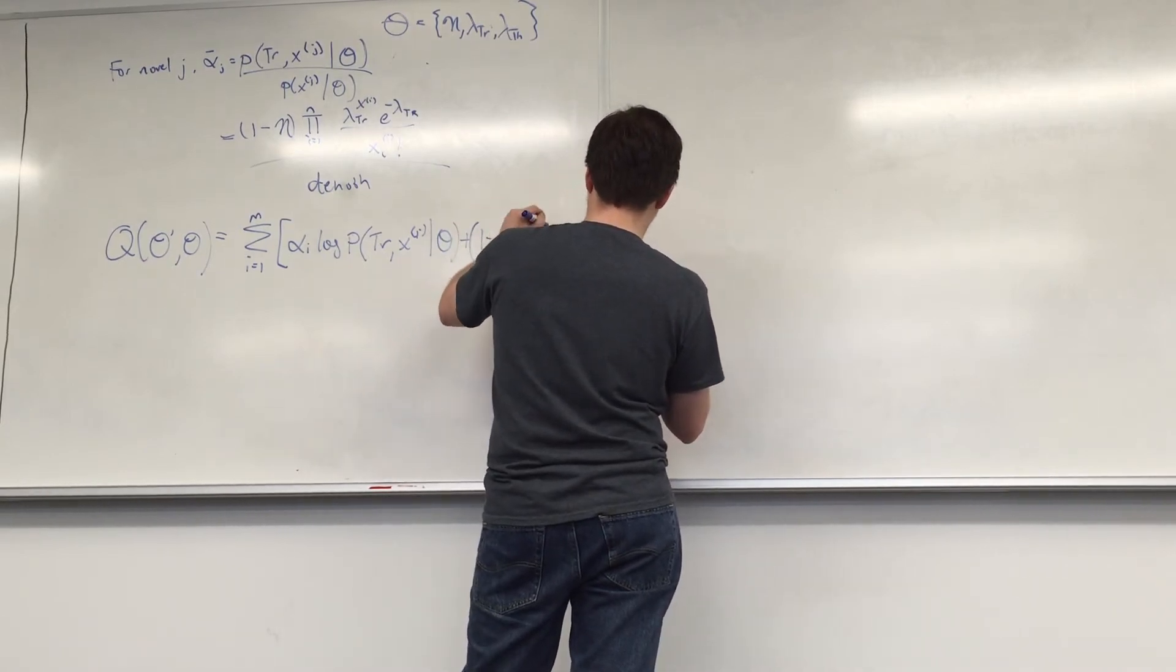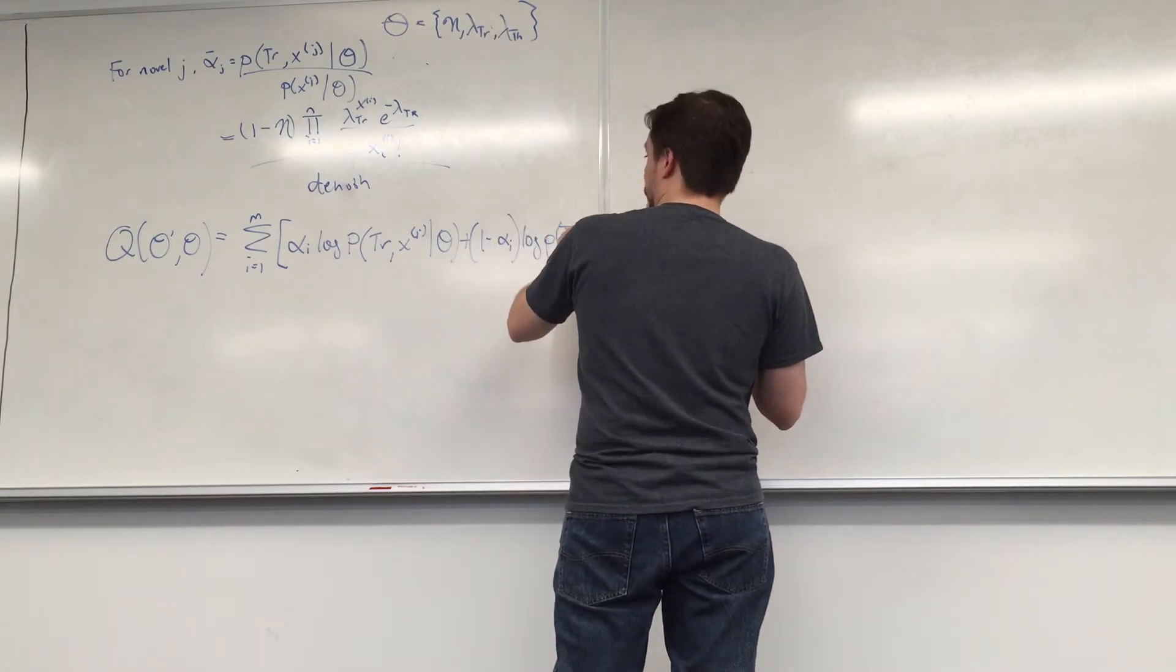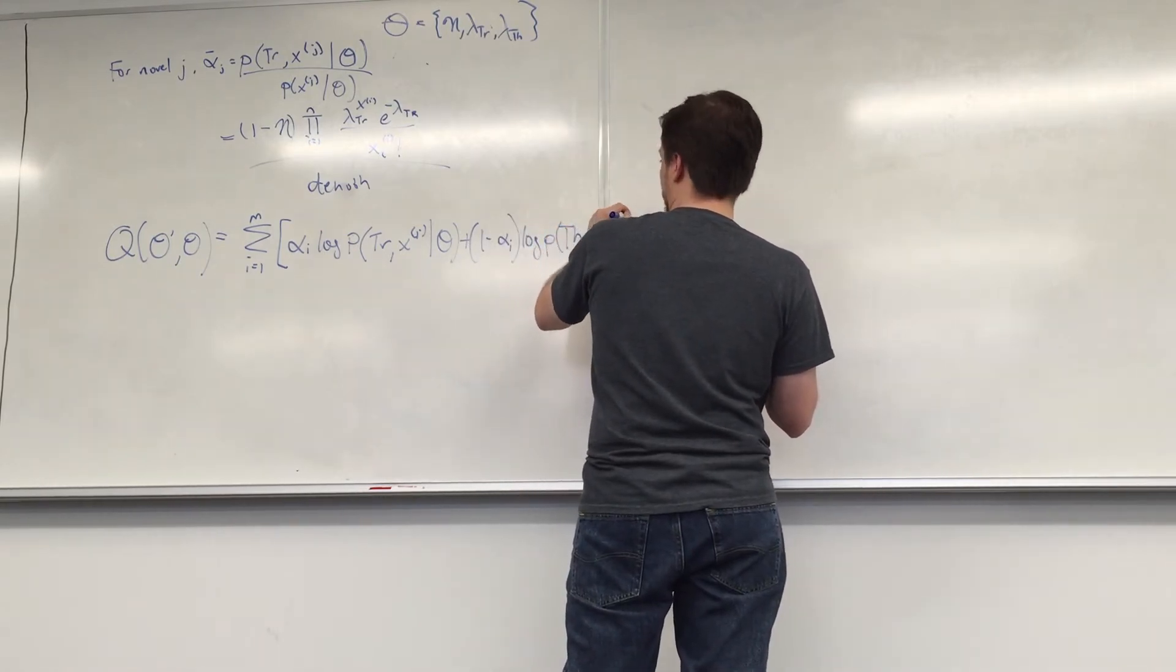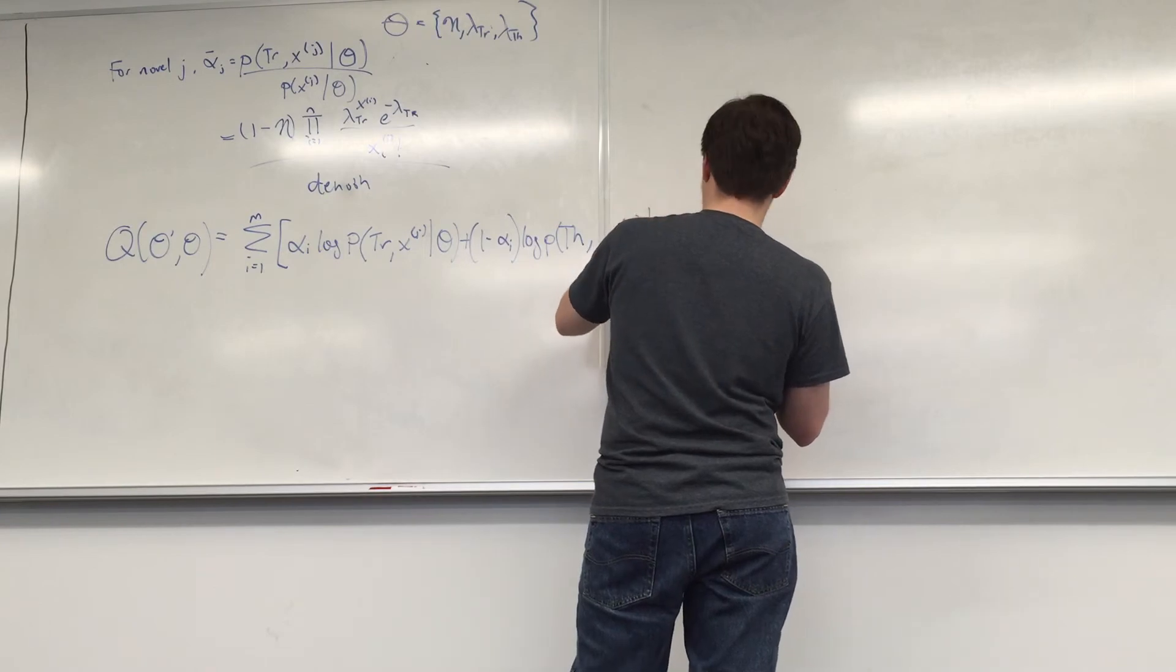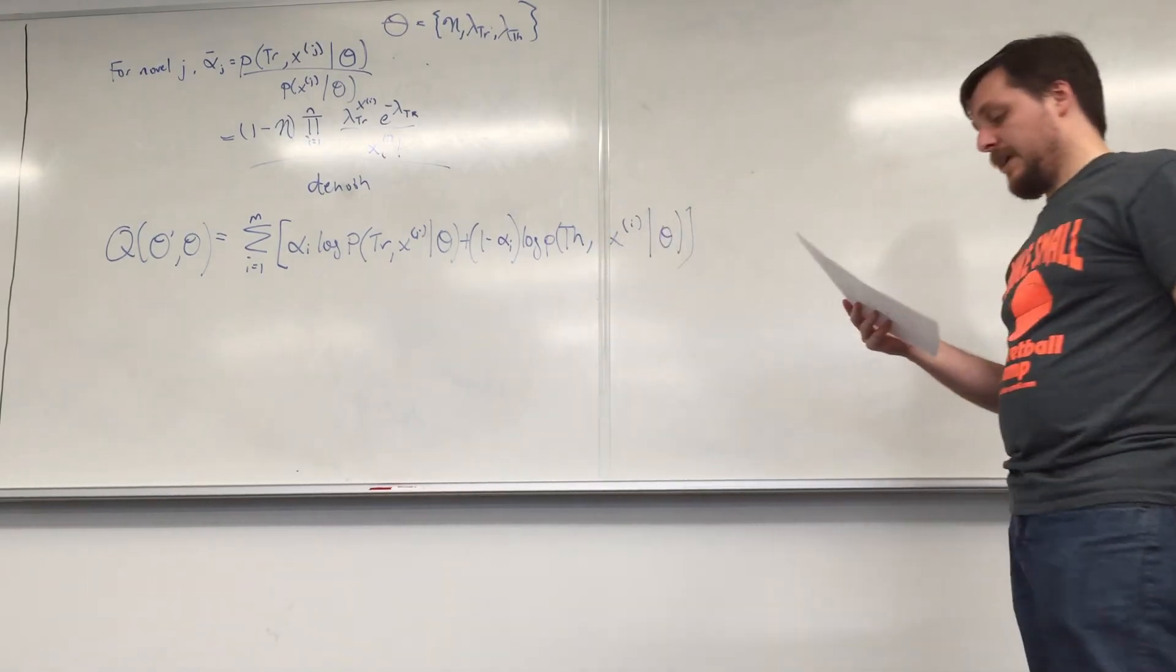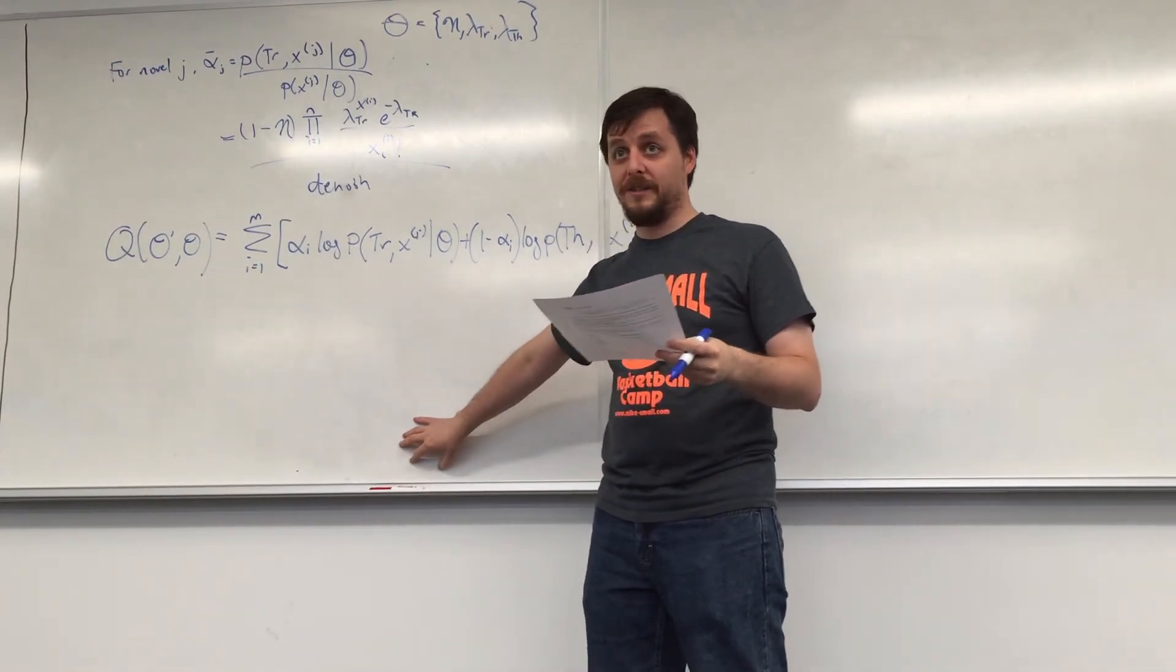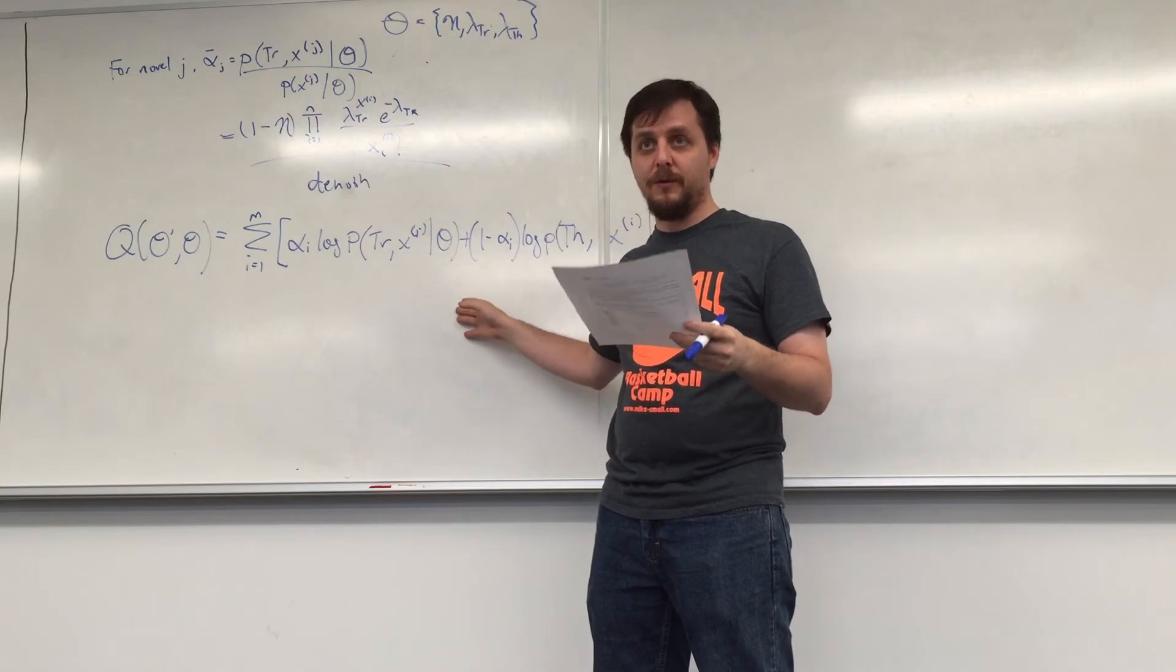1 minus alpha i, log p Trollope, x i, given theta plus 1 minus alpha i, log p Trollope.